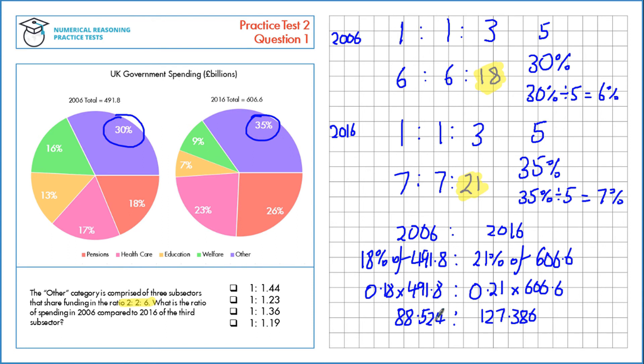Now we need to simplify it by dividing through by the smaller number — that's this one. On the left hand side we're left with 1, and 127.386 divided by the smaller number is 1.44.